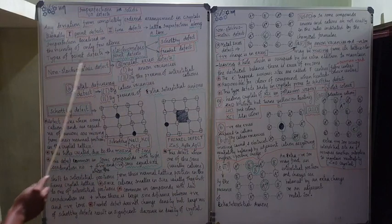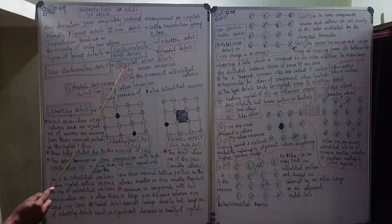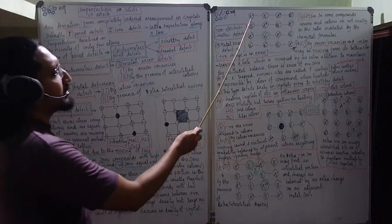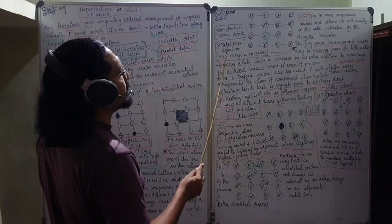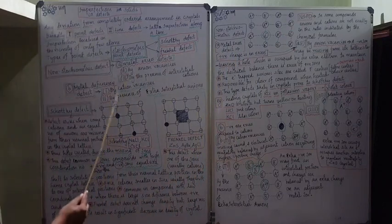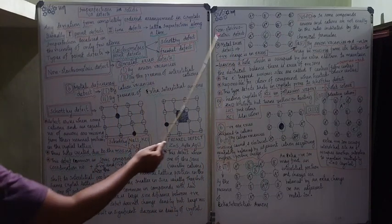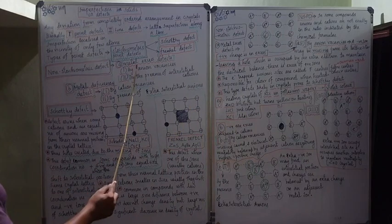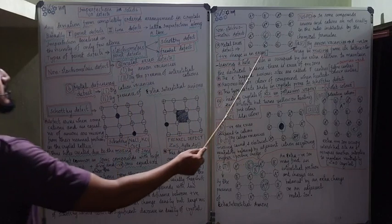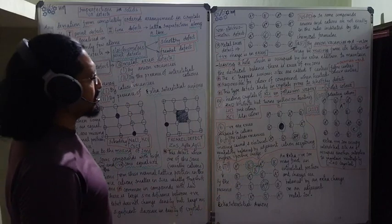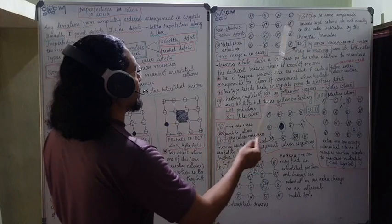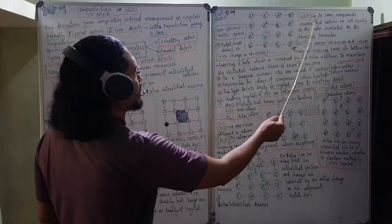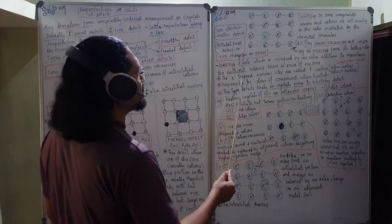Now we move to non-stoichiometric point defects. Metal excess defect means positive ions are in excess. In some compounds, anions and cations are not exactly in the ratio indicated by the chemical formula. One cause is anion vacancy: a negative ion is missing from its lattice site, which means positive ions become relatively greater in number.